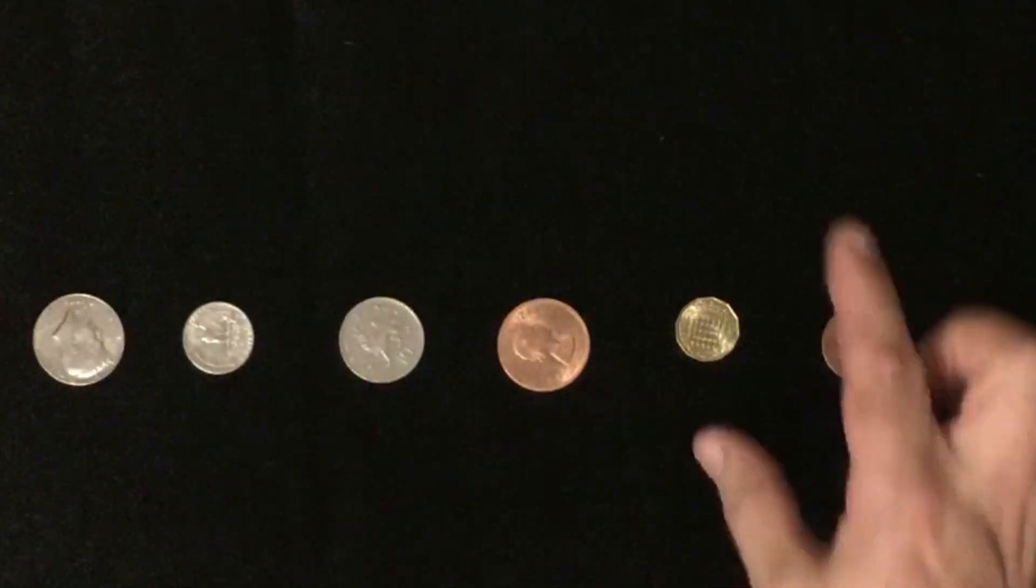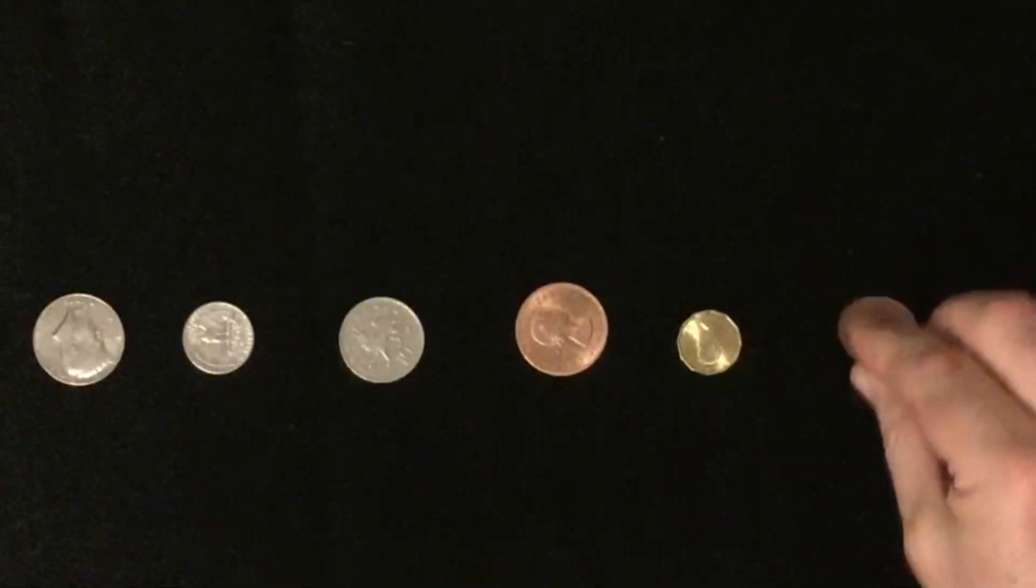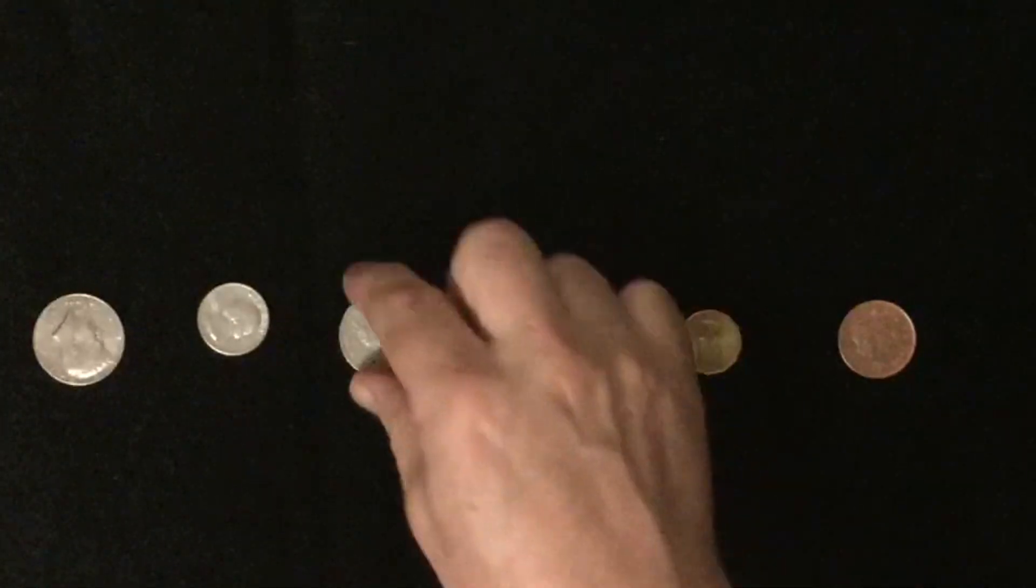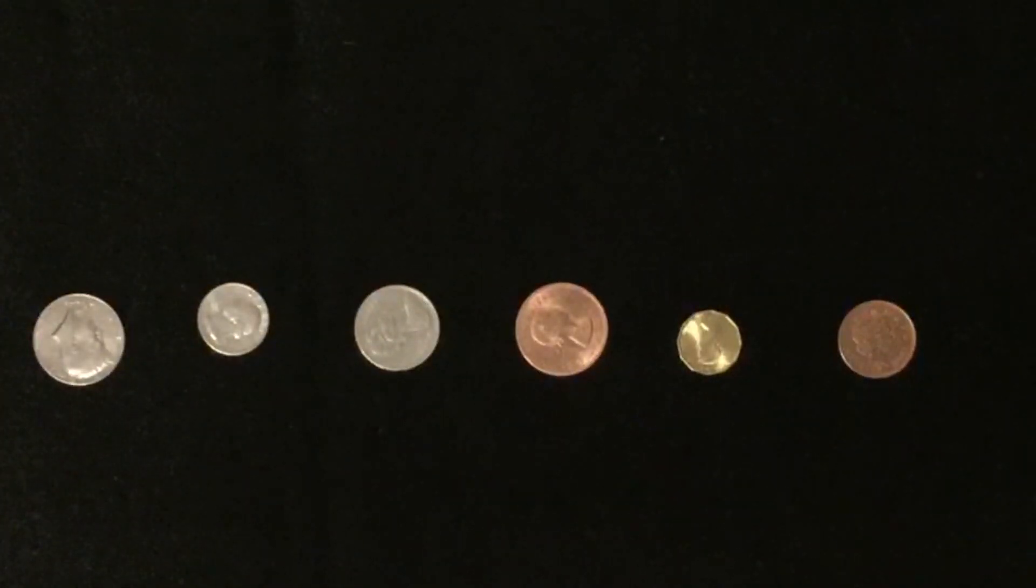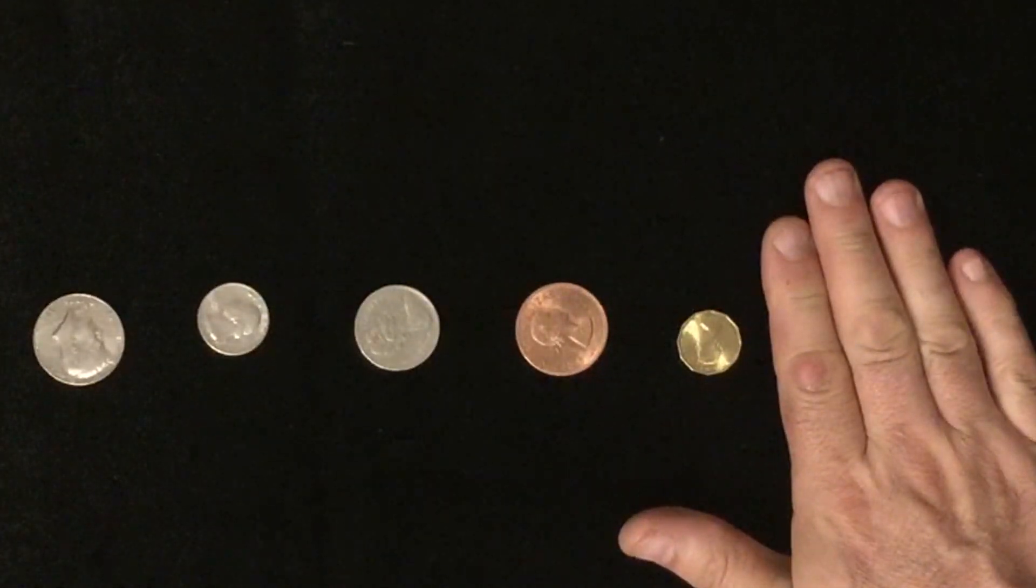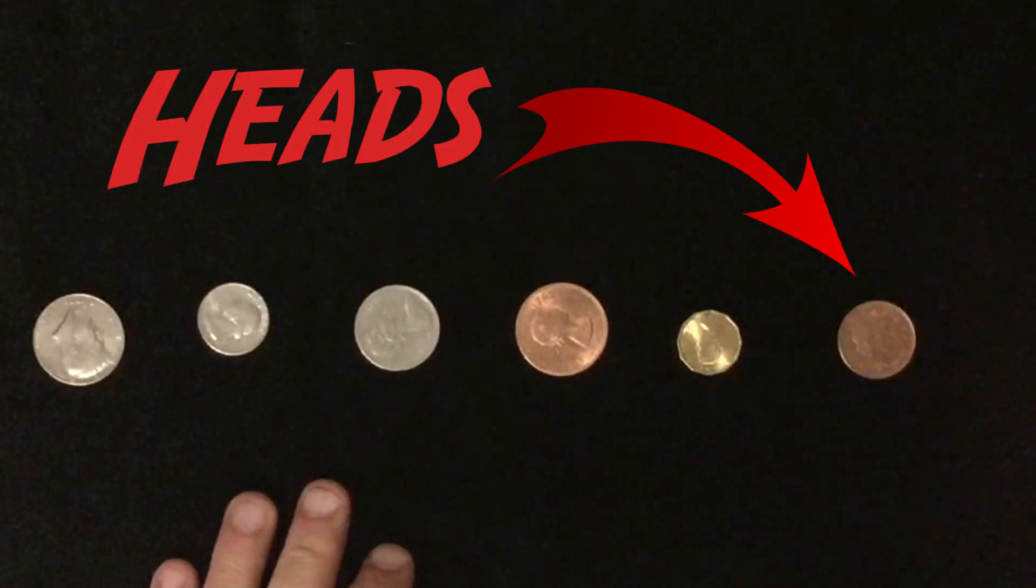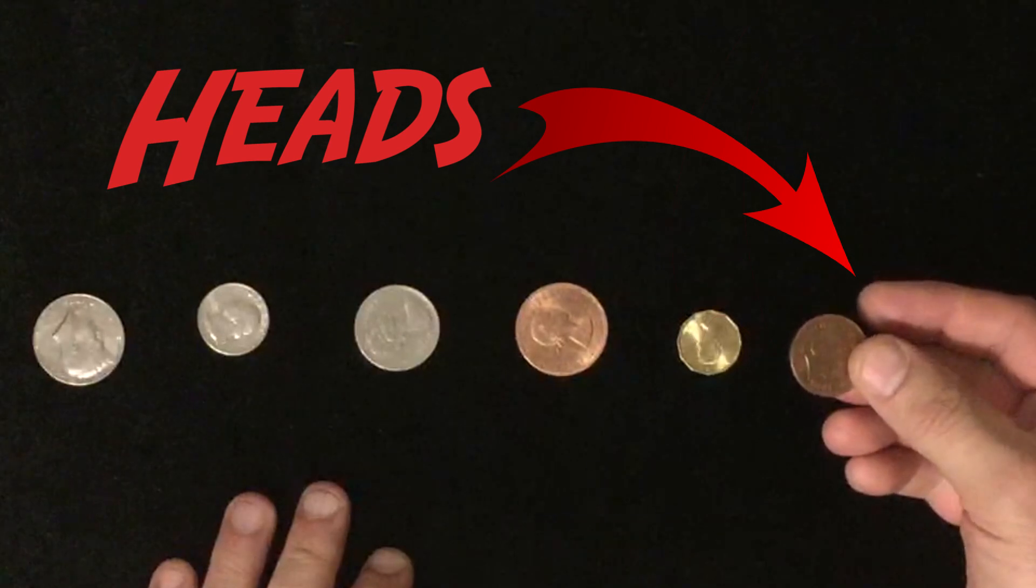So the game goes like this: you turn your back. They then turn coins over and every time they turn a coin over they say turn, turn, turn, turn, turn, turn. Before you turn around you ask them to cover any one of the coins with their hand. You turn around and immediately you can reveal that the coin under the hand is head side up, and it proves true.